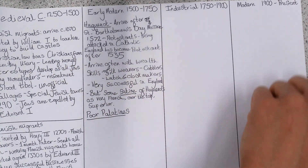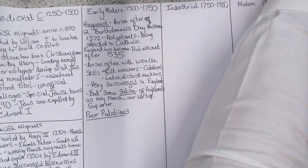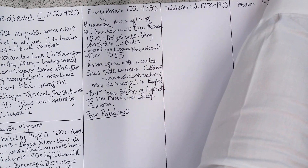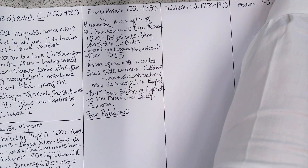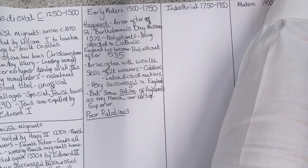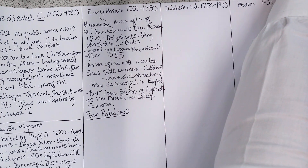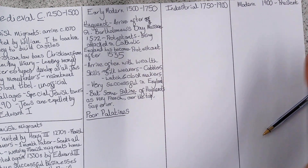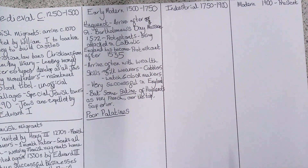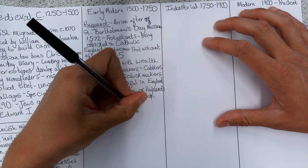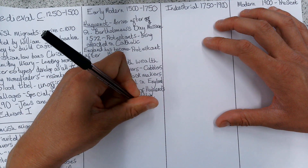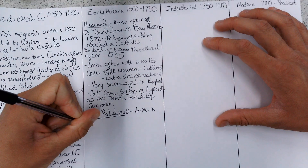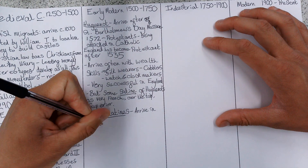Another interesting case to look at is the Poor Palatines. The Poor Palatines arrive in London in 1709.